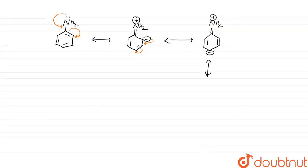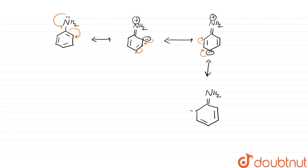Again the electrons shift further, giving another resonance structure where there is a double bond at a different position in the benzene ring, a negative charge on another ring carbon, and a positive charge on NH2.